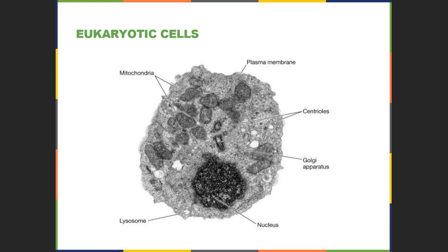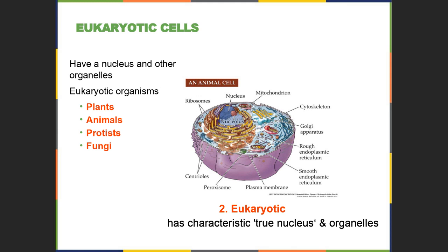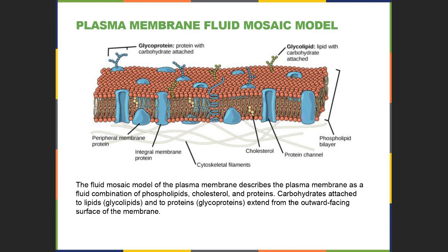Eukaryotic cells include plants, animals, protists, and fungi. They may or may not have a cell wall — fungi and plants have cell walls, some protists can have cell walls, but animals never have a cell wall, though they do have a plasma membrane. The fluid mosaic model says membranes are constructed of many types of macromolecules: phospholipids, proteins, cholesterol, glycolipids — sugars attached to lipids — and glycoproteins — carbohydrates attached to proteins.